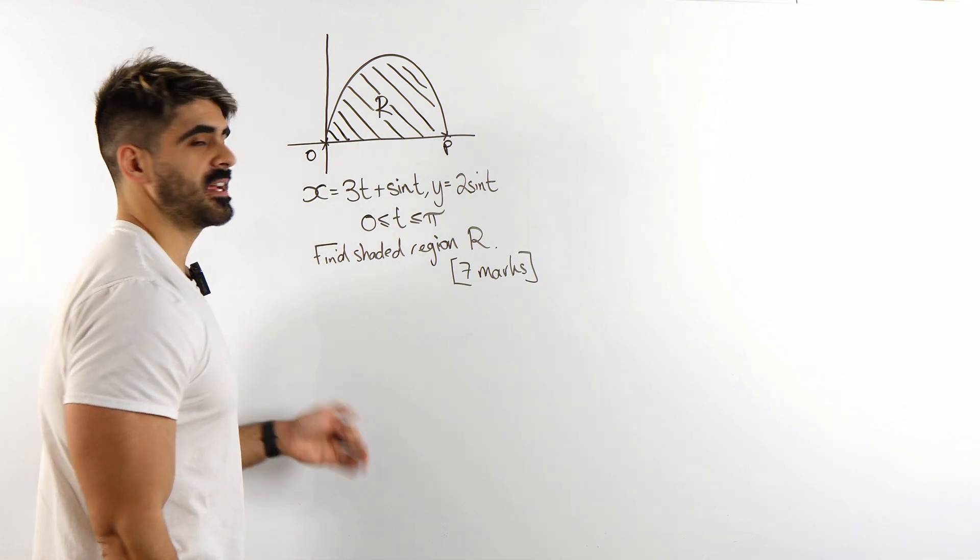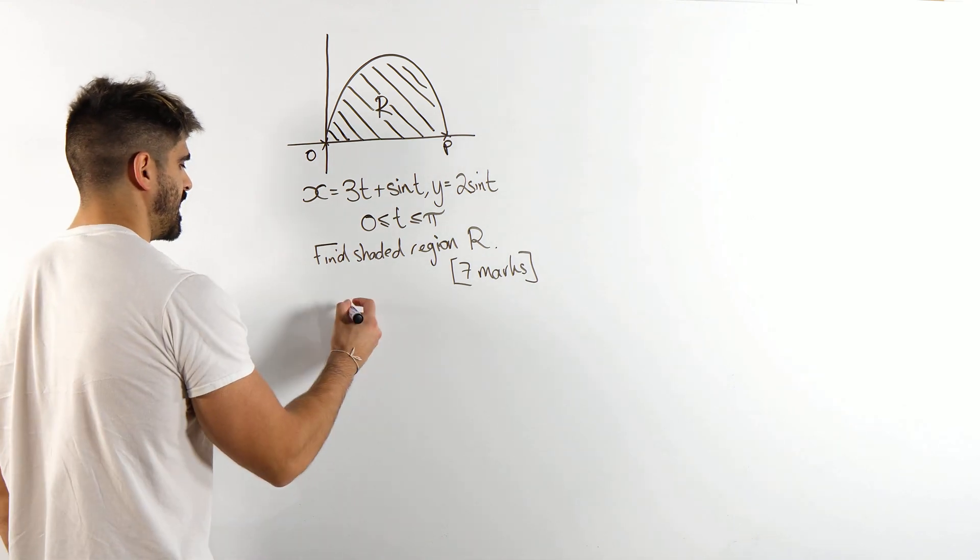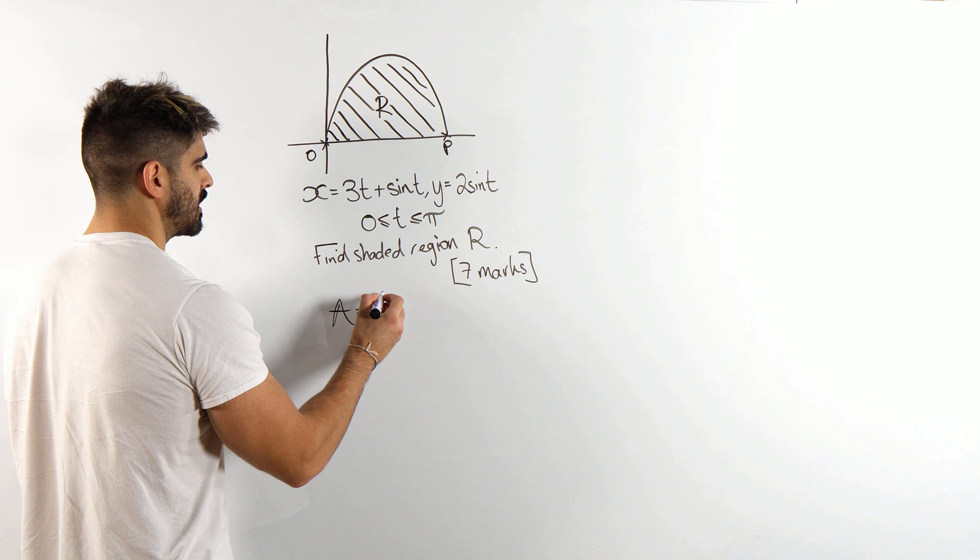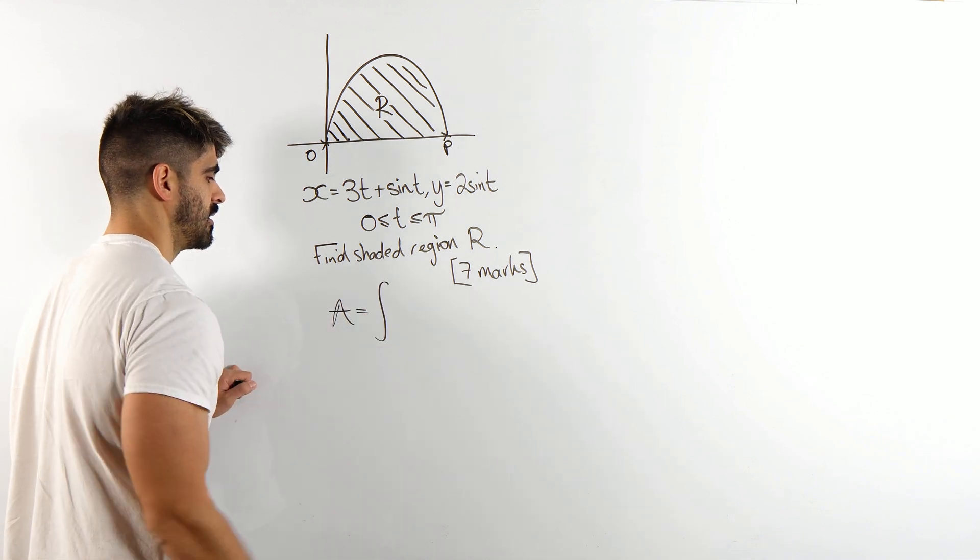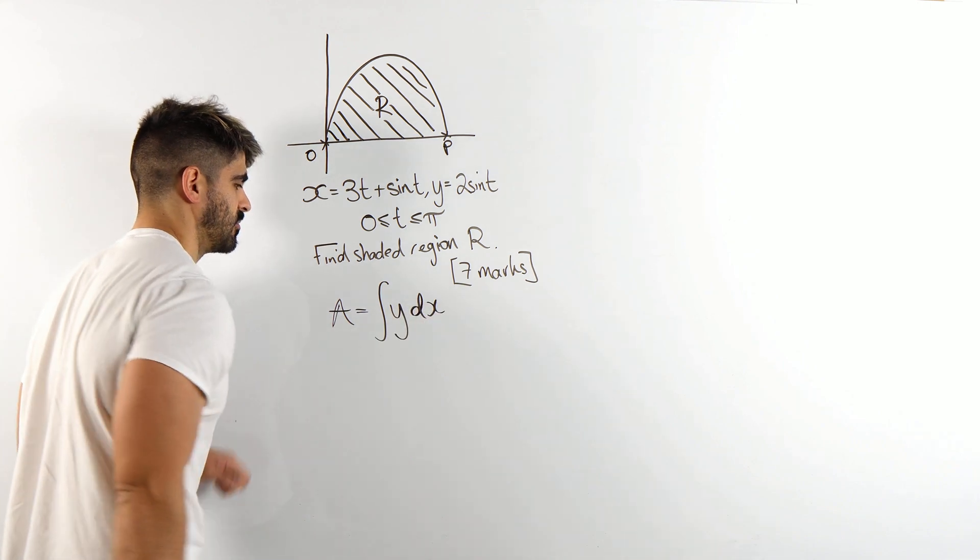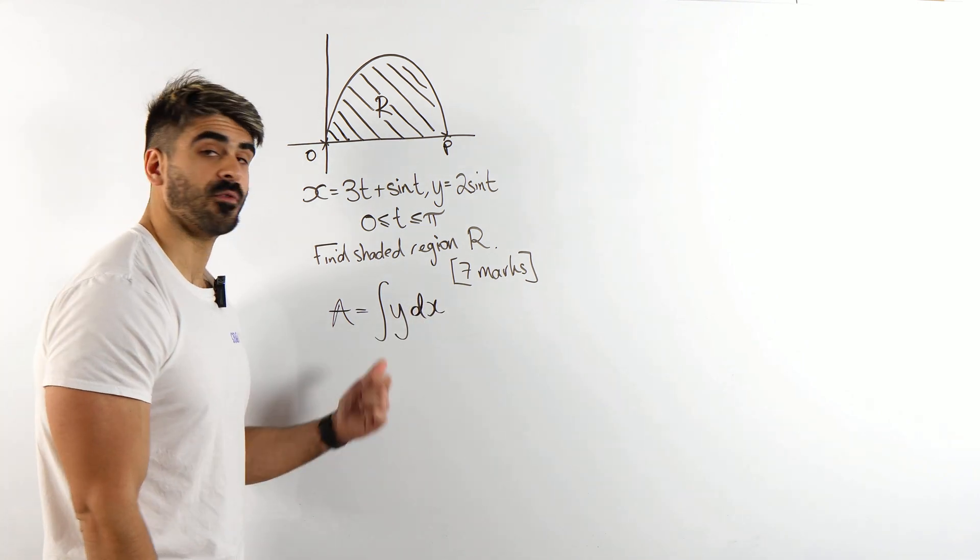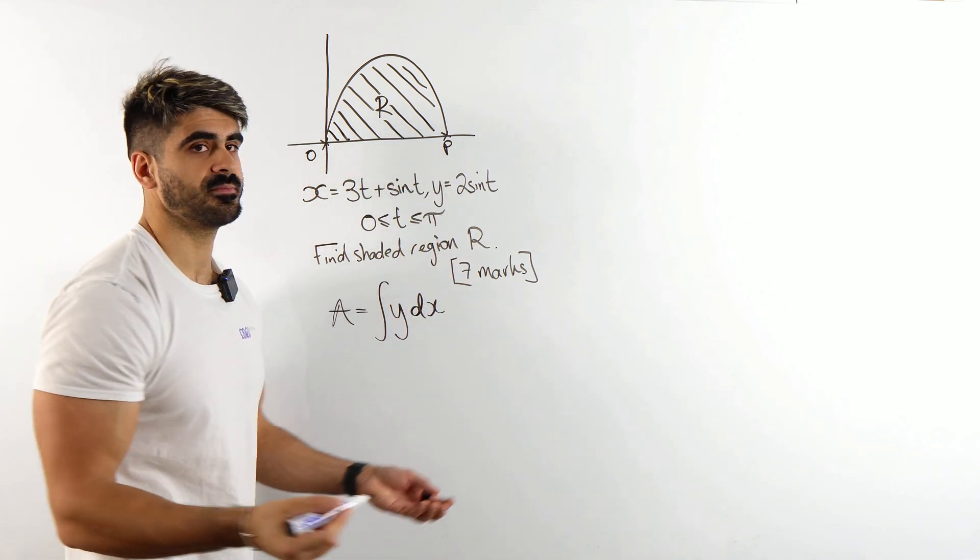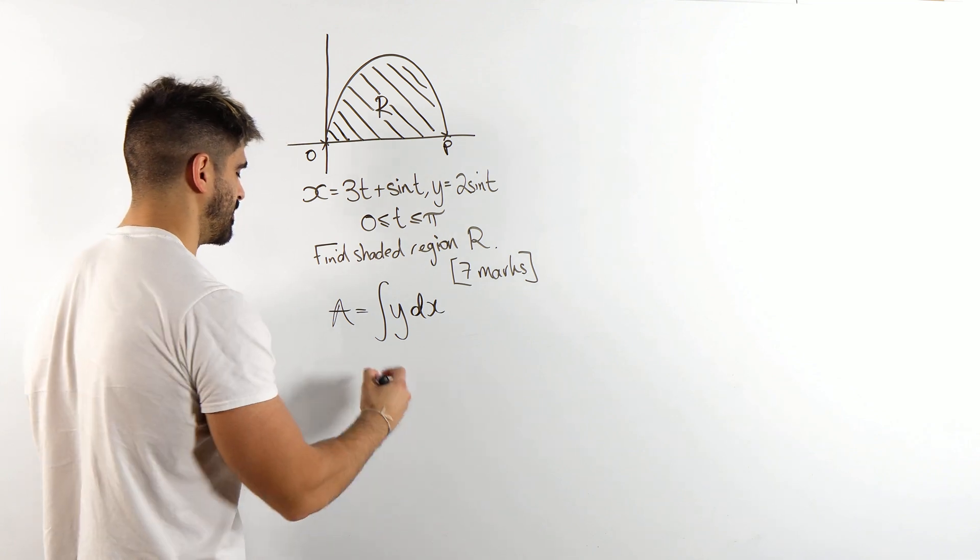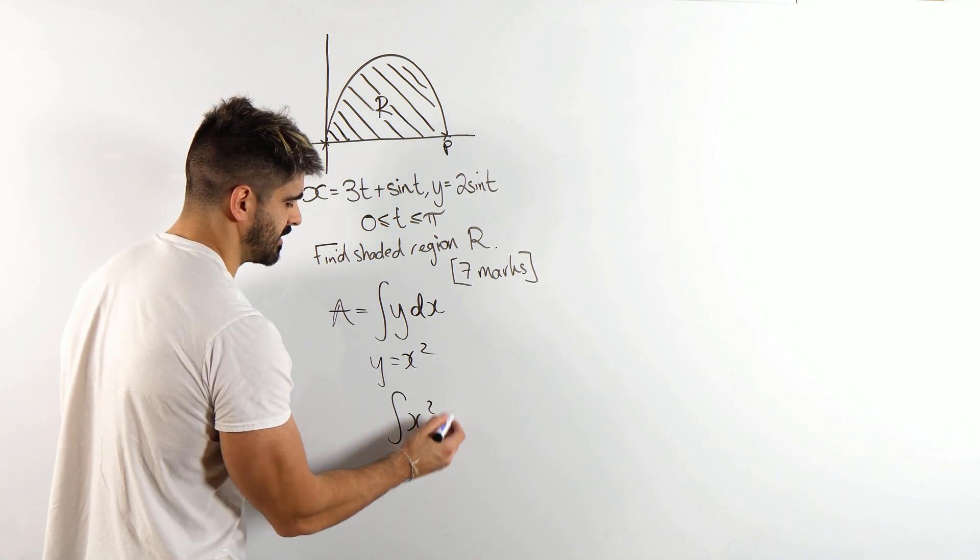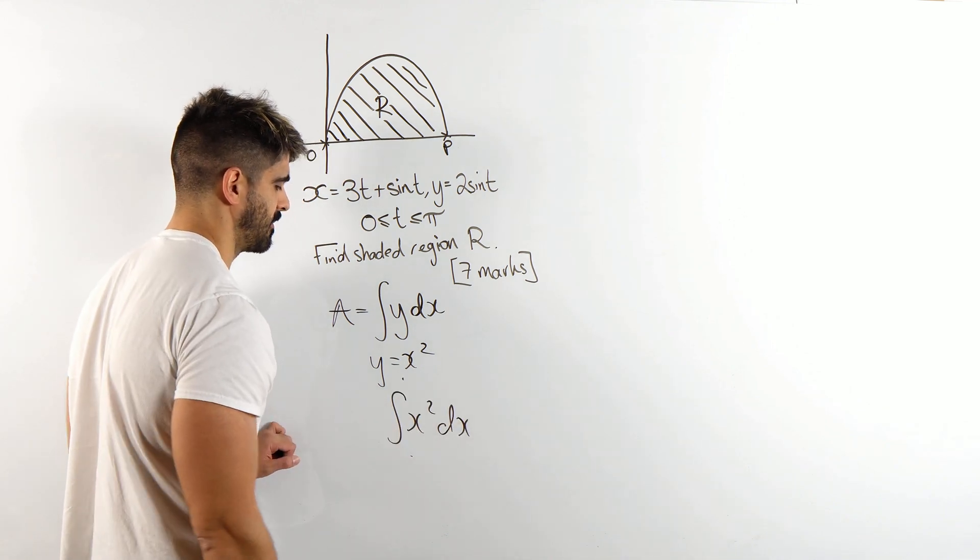So how do you find any area? To find any area, what you do is you integrate some function of y with respect to x, don't you? So, for example, if you're integrating, say this curve was, I don't know, it's going to be bad, but imagine it was y equals x squared. You would integrate x squared dx between your limits, alright?